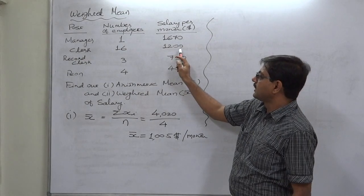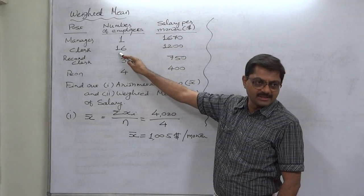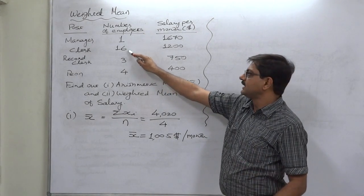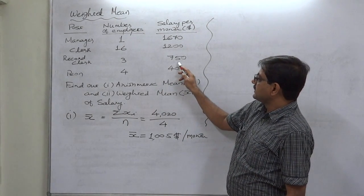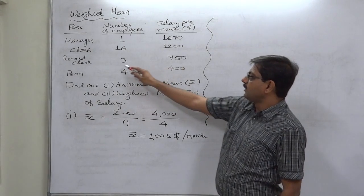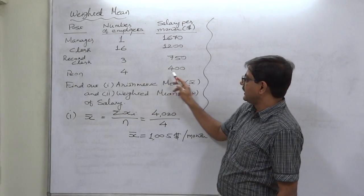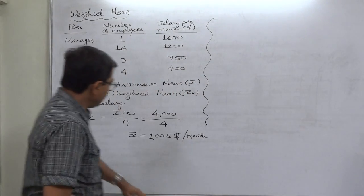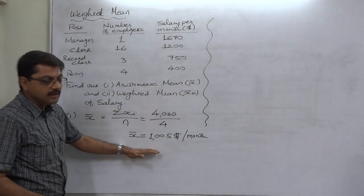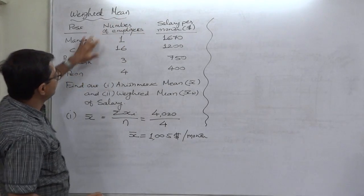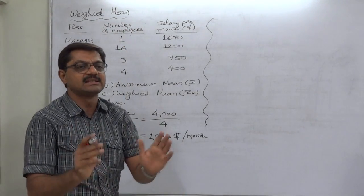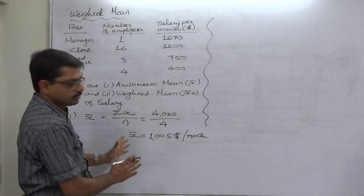The salary of 1670 is paid to one person, but the salary of 1200 is paid to 16 persons, so total will be 1200 multiplied by 16. Similarly, salary of 750 is paid to three persons and salary of 400 is paid to four persons. In calculating the simple or arithmetic mean, we have ignored the number of persons or the total amount paid as salary every month.